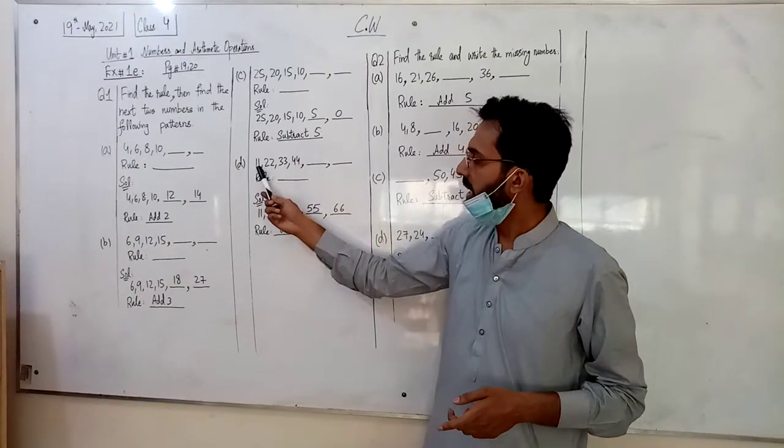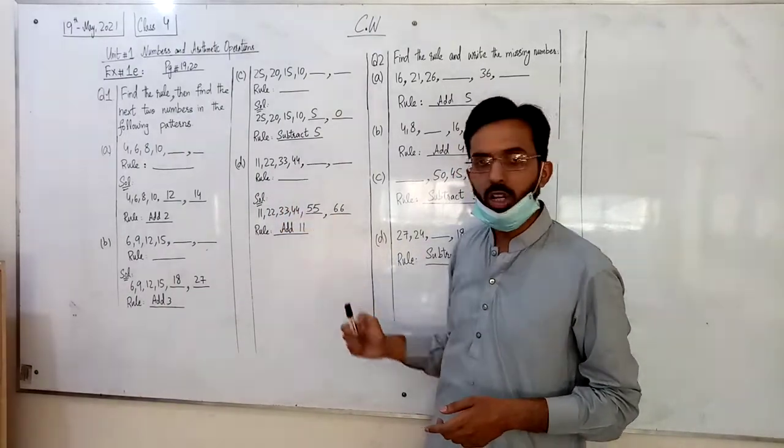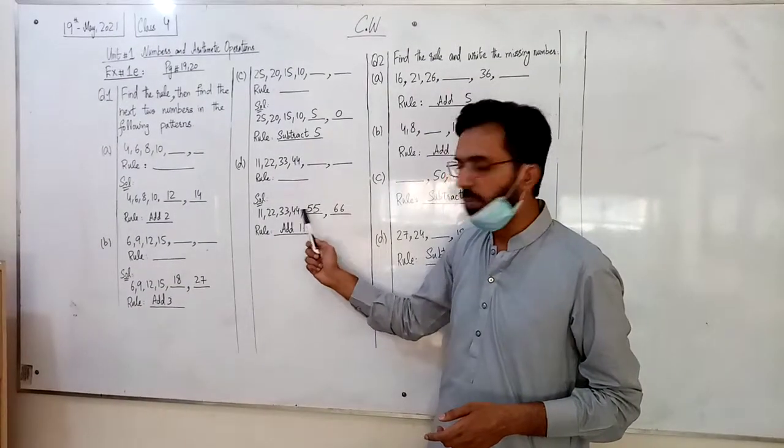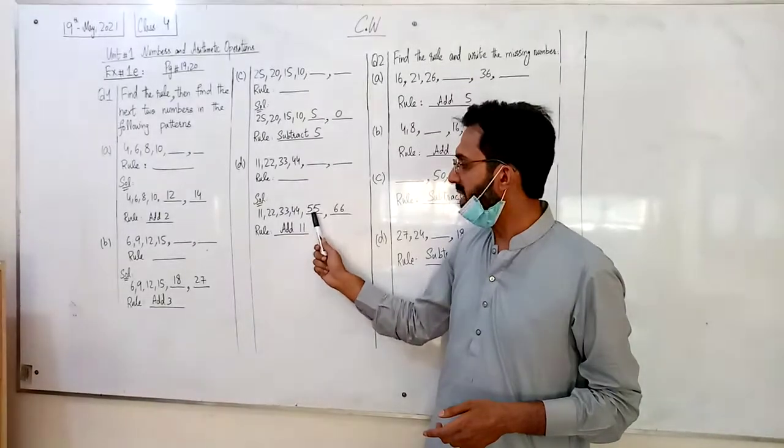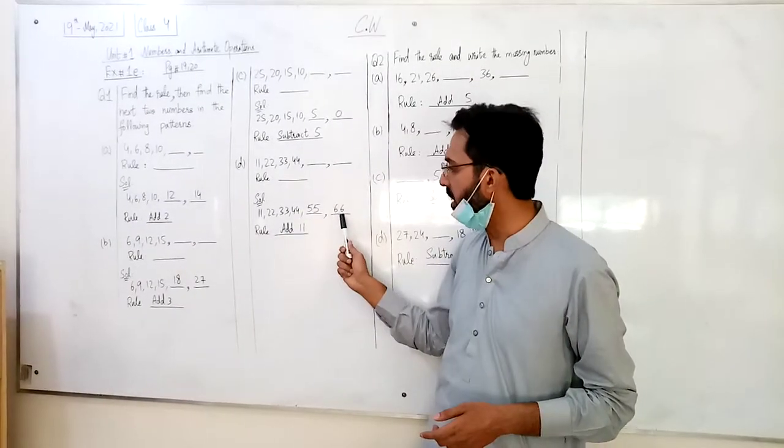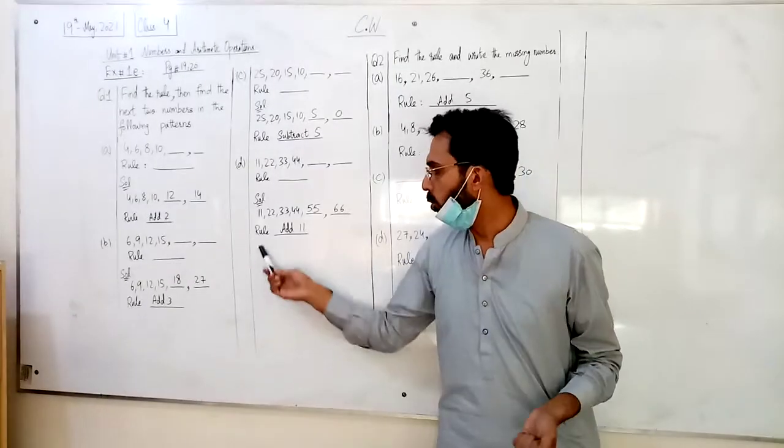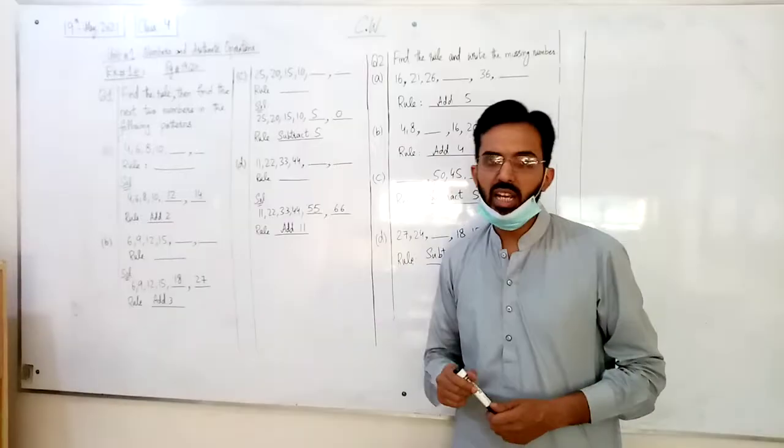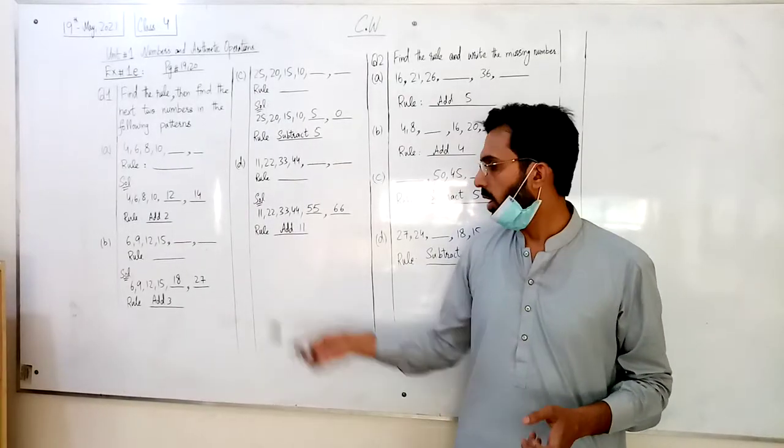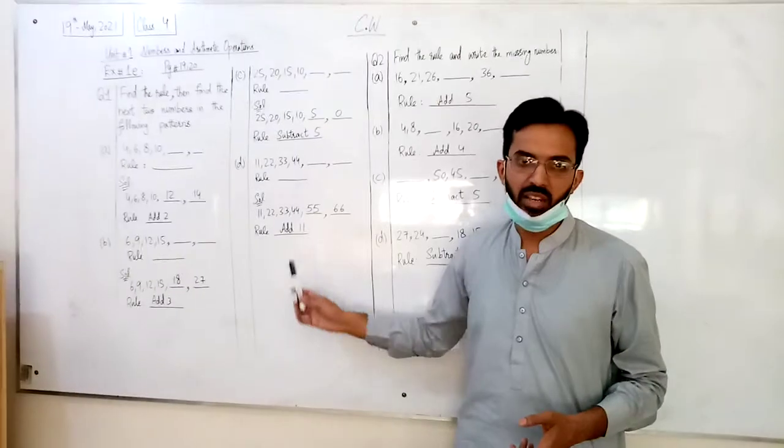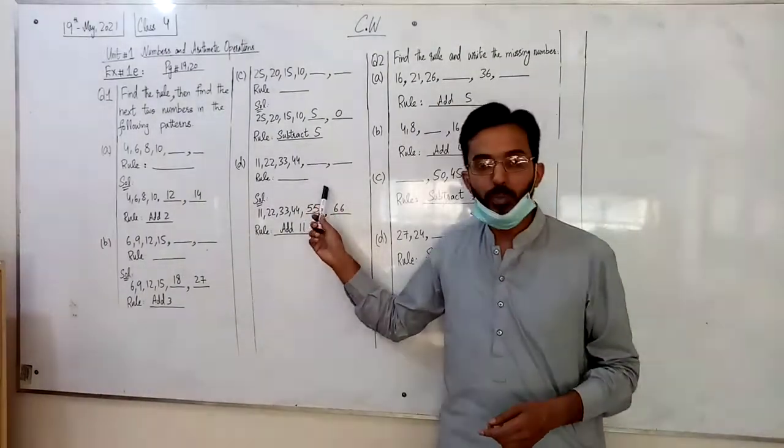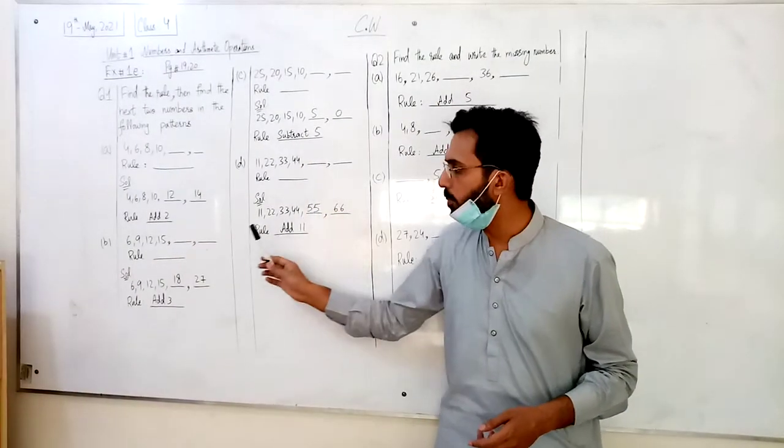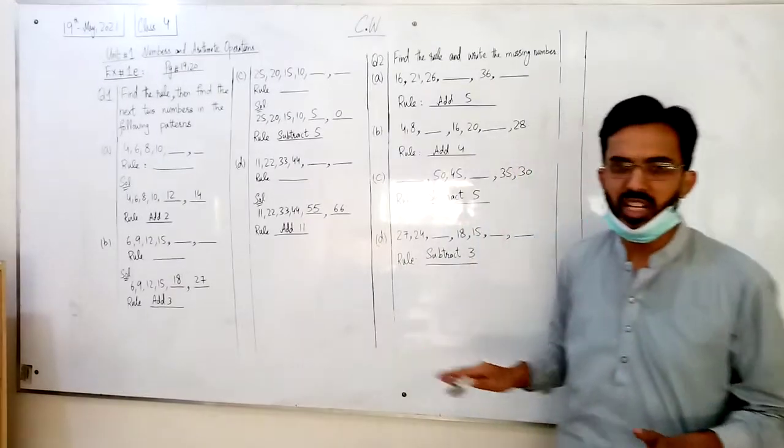D part: 11, 22, 33, 44. So we have 11 plus 11. 44 plus 11 is 55, 55 plus 11 is 66. So in the rule, we have 11. So we will add 11. I hope you will get easier to understand. It is not difficult, it is very easy, it is very interesting.